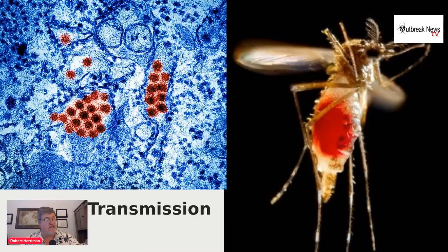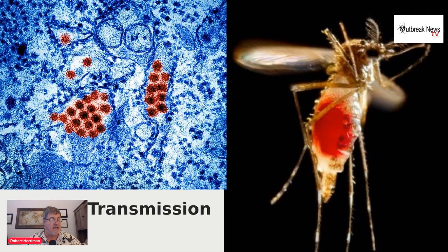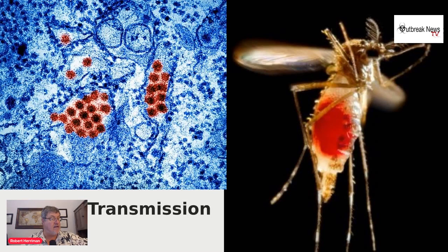Transmission: dengue isn't contagious directly from one person to another like the flu. Transmission is via the mosquito. Only a few mosquito species are vectors for the dengue virus — a vector is a vehicle that carries and transmits a disease to its host organism. The dengue virus is spread through a human-to-mosquito-to-human cycle of transmission, carried and spread by female mosquitoes, which require blood to produce eggs. The primary vector for dengue virus is the species Aedes aegypti.